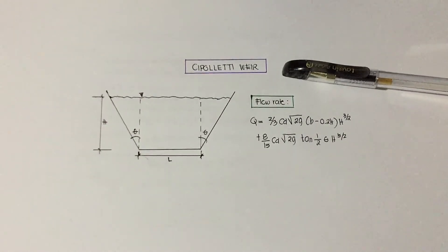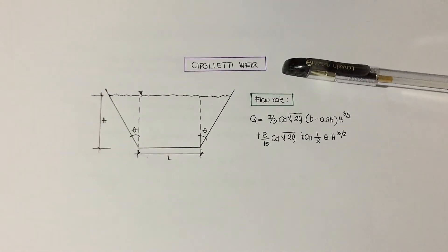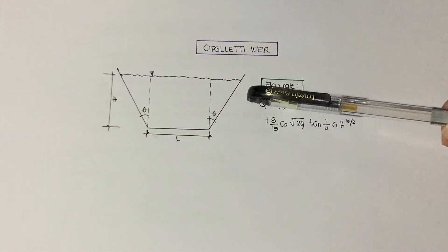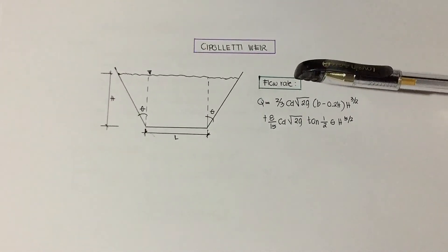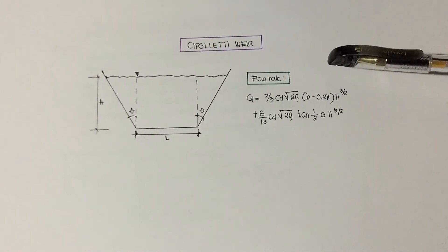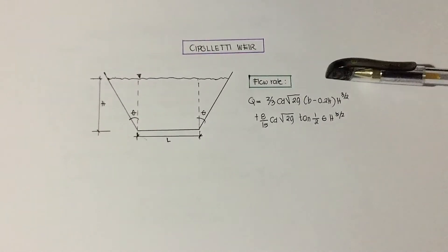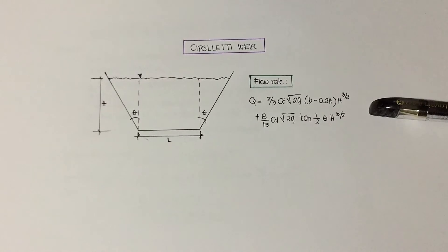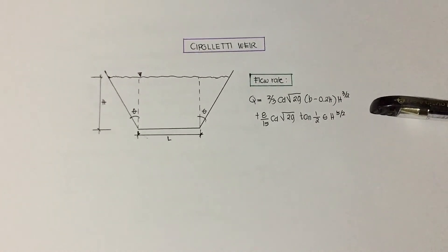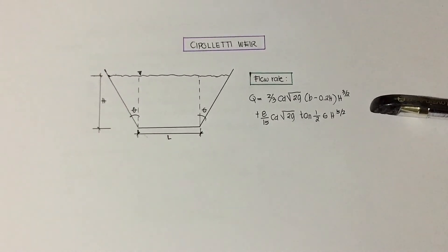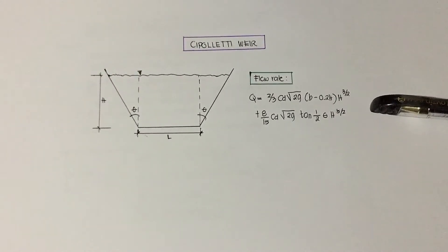The Cipolletti weir is an improved rectangular notch with a slightly higher capacity for the same length. Its opening is trapezoidal with the sides inclining at a slope of four vertical to one horizontal. The angle theta in the Cipolletti weir is equal to 14 degrees. The formula for flow rate is equal to two-thirds times the coefficient of discharge times the square root of 2g times the quantity of b minus 0.2h, times h to the power of three-halves, plus 8 over 15 times the coefficient of discharge times the square root of 2g times tangent theta over 2 times h to the power of five-halves.